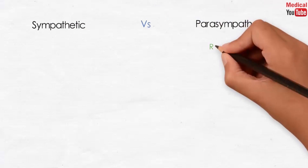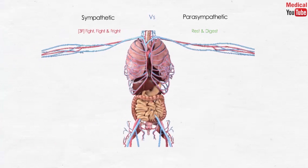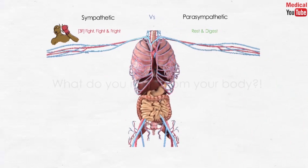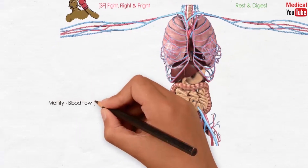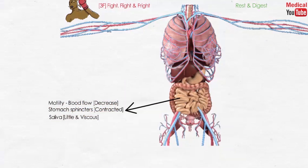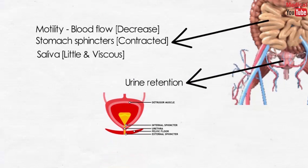Now let's discuss the actions of the sympathetic and parasympathetic nervous systems. The sympathetic works in stressful fight, fright, and flight conditions. Suppose you are in a fight — do you need your GIT or urinary bladder to be stimulated? The answer is no. So GIT motility and blood flow decrease, sphincters of the stomach contract, saliva secretion becomes little and viscous, and urine retention happens through contraction of the sphincter muscle and relaxation of the detrusor muscle in the urinary bladder.